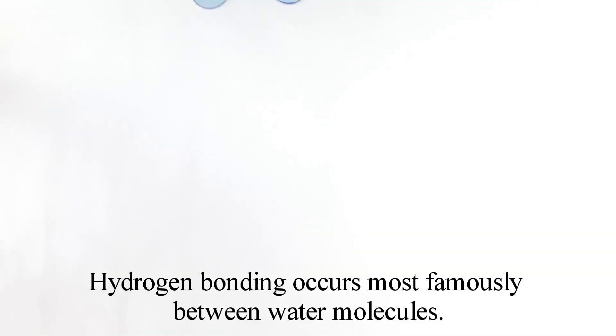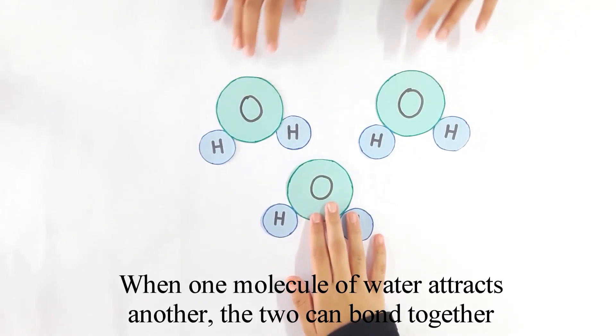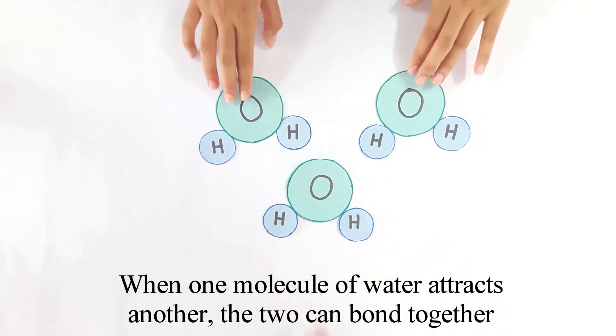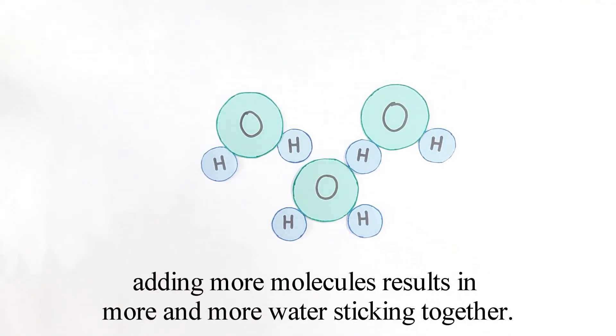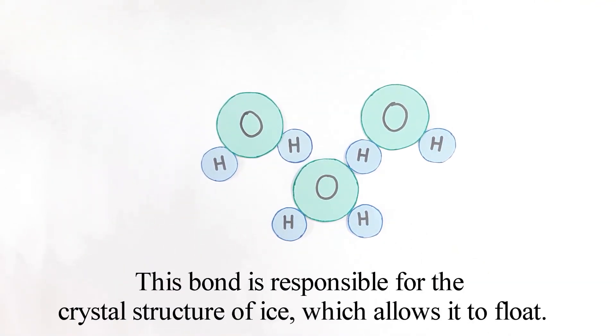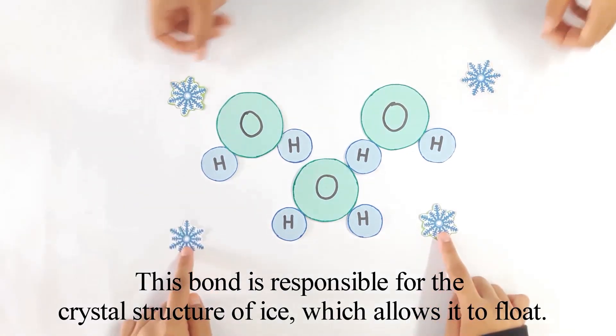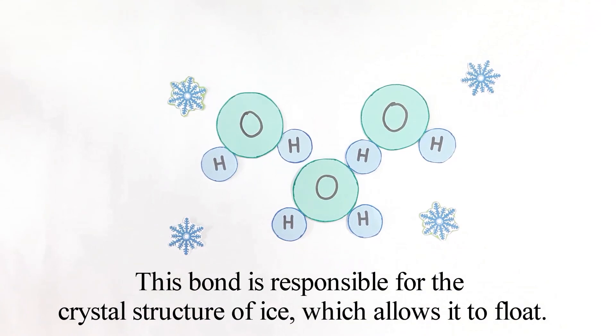Hydrogen bonding occurs most famously between water molecules. When one molecule of water attracts another, the two can bond together. Adding more molecules results in more and more water sticking together. This bond is responsible for the crystal structure of ice which allows it to float.